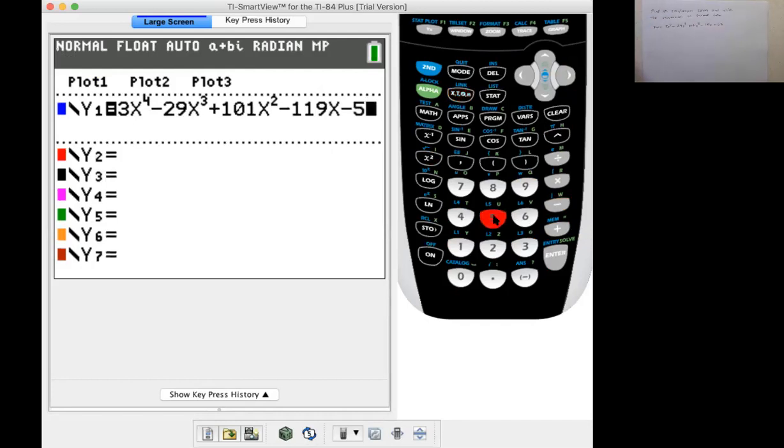Now, thinking of the rational zero test, there's a lot of factors of 52: 1, 2, 3, 4, 13, 26, 52, and a lot of factors of 3: 1, 2, and 3. So to list all of them would take a very long time.